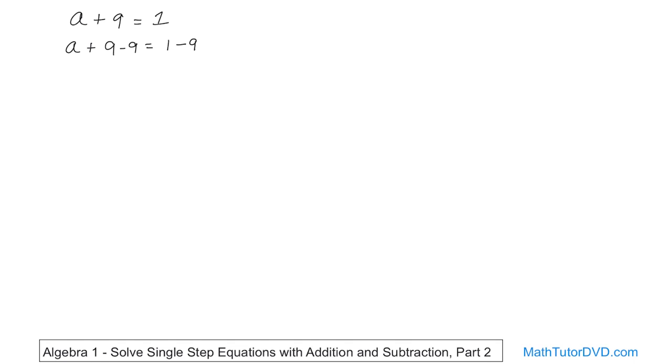And what that is going to do is 9 minus 9 is going to give you 0 on the left. So really all you're going to have is a on the left equals. And on the right hand side, you'll have 1 minus 9.